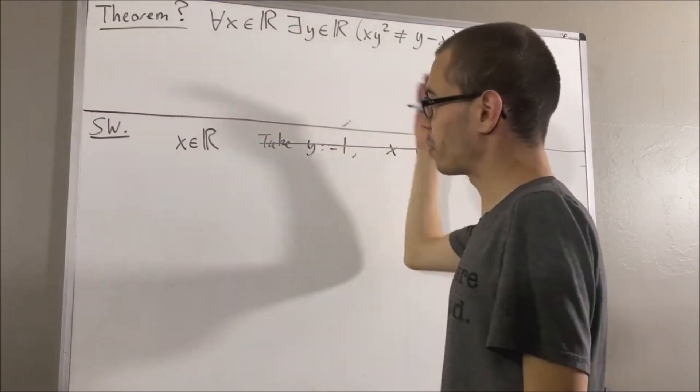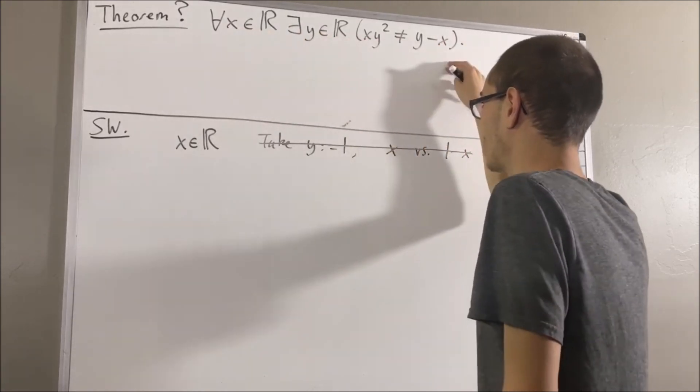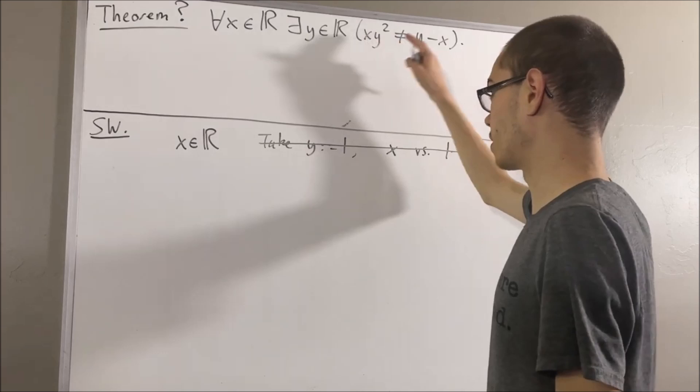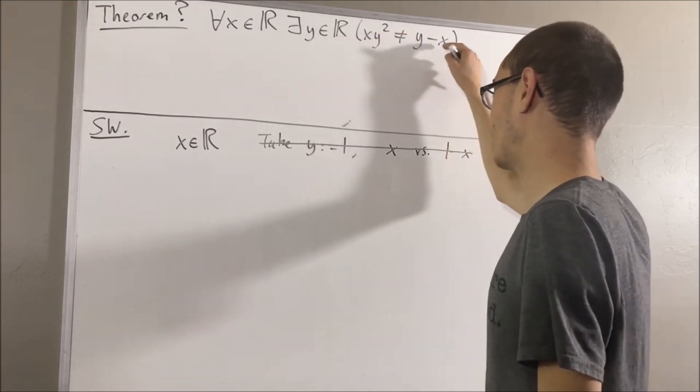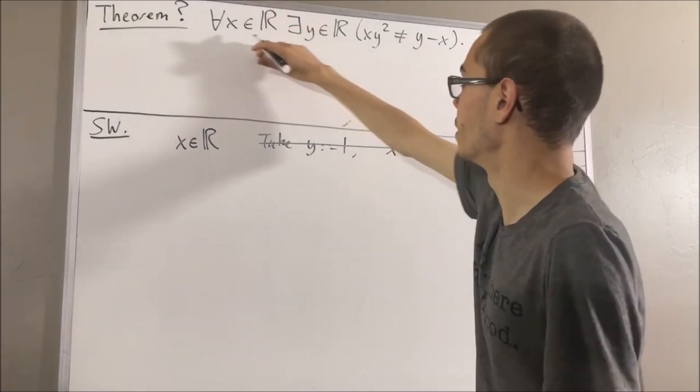Okay, you know what? Maybe let's try proving the negation, because I can't seem to figure out what to choose for x. Like if we chose y equals x squared, for instance, we would have x to the fifth x squared minus x. I don't see what we can do with that. So maybe we should just try proving the negation of this statement.